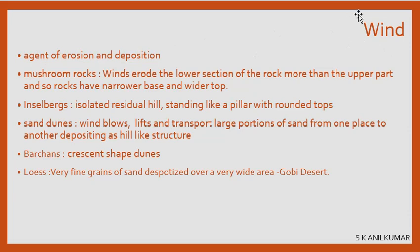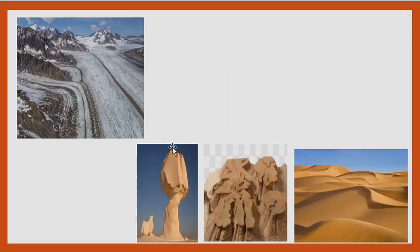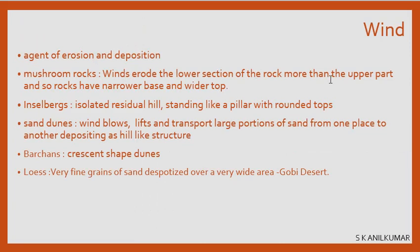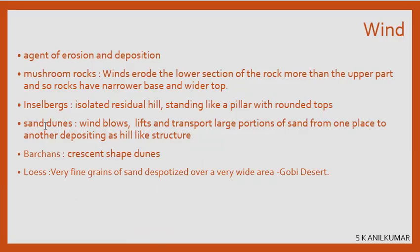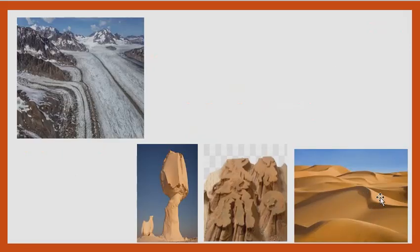Wind is the most important agent of erosion and deposition in deserts. Mushroom rocks are formed because the lower section of the rock is eroded more than the upper part, resulting in a narrow base and a wider top. An inselberg is an isolated residual hill standing like a pillar with a rounded top. Sand dunes are formed when wind lifts and transports sand from one place and deposits it like a hill at another place.